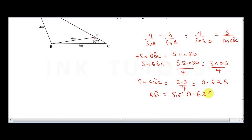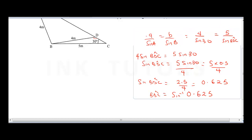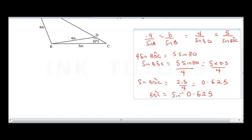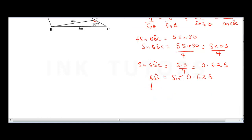Therefore angle BDC equals the sine inverse of 0.625. We need to put 0.625 into our calculator: shift sine inverse of 0.625. It gives us 38.68 degrees. So our BDC is 38.68 degrees.